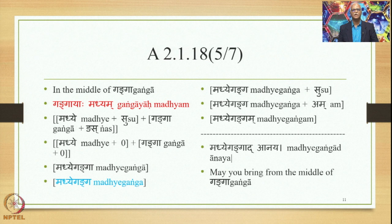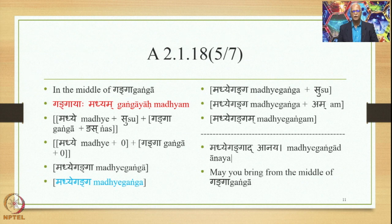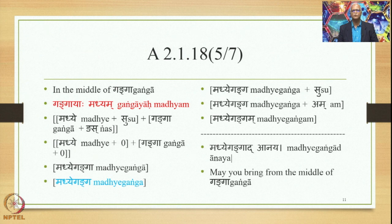Similarly, if the meaning intended is 'in the middle of Ganga' — that is Gangayaha Madhyam — this is the laukika vigraha. So we have the alaukika vigraha as Madhye + su + Ganga + ngas. The word Madhye is stated in sutra 2.1.18 in prathama vibhakti, therefore it becomes upasarjana and occupies the initial position of the Samasa. So we have Madhye + su + Ganga + ngas. Because of 2.1.18 this becomes an Avyayibhava Samasa, we get the pratipadika sanjna, and apply Supodhatup Pratipadikayoho to delete both sups. So we get Madhye Ganga as the compound form.